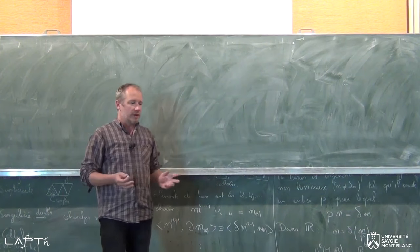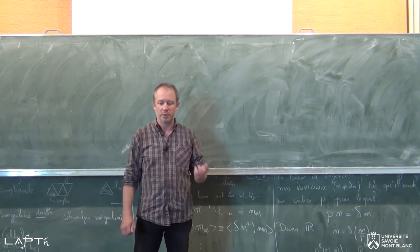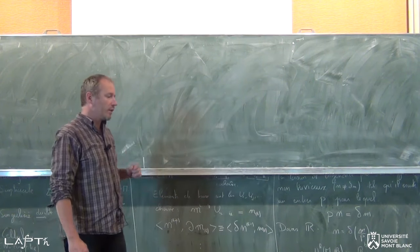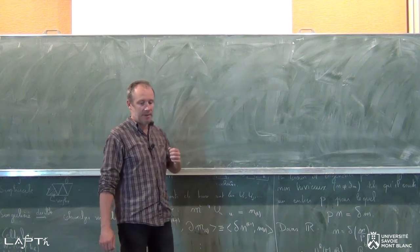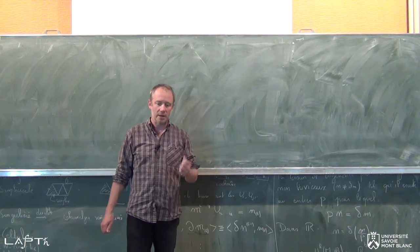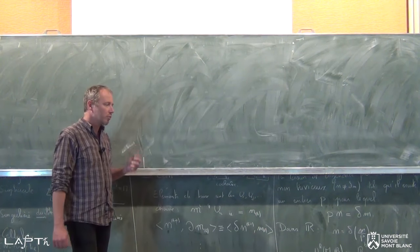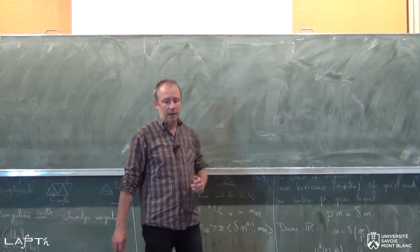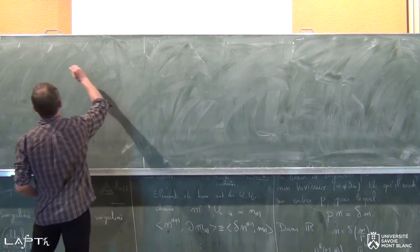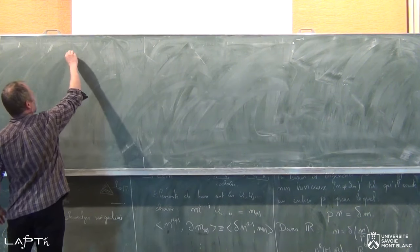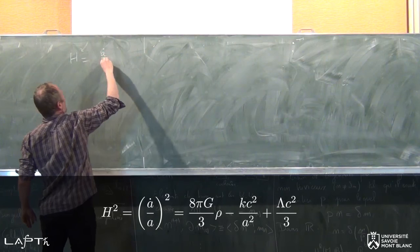Qu'est-ce que l'expansion de l'univers ? L'expansion de l'univers varie au cours du temps. Et si on met tout ça ensemble, on est arrivé aux équations de Friedman-Lemaître. Une des équations de Friedman-Lemaître, celle qui nous donne la valeur de A point sur A.